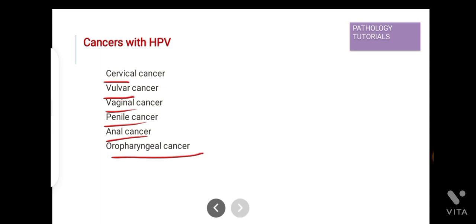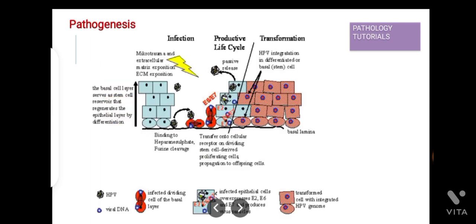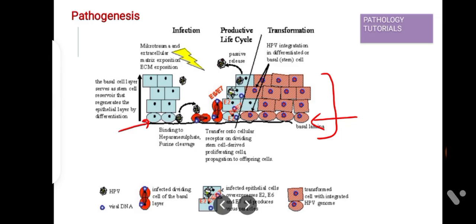Now coming to the pathogenesis of cervical cancer by human papillomavirus. This is the stratified squamous epithelium of the cervix, and this is the basal layer. The basal layer serves as a stem cell reservoir that regenerates the epithelial layer by differentiation. HPV causes cancer by infecting the basal layer of stratified squamous epithelium. Once inside the host cell, HPV DNA replicates, differentiates, and progresses to the surface of the epithelium.